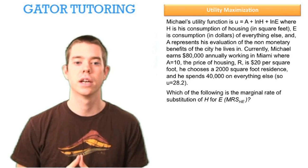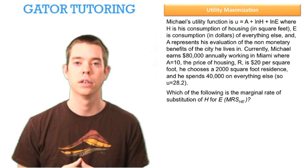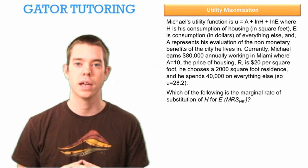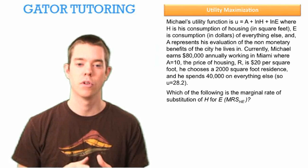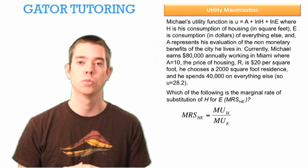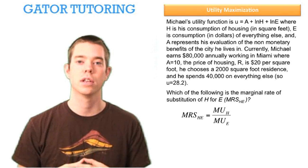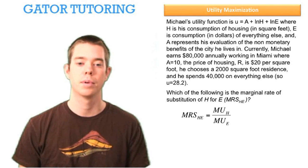The first question says, which of the following is the marginal rate of substitution of H for E? So what is the MRS subscript HE? Well, the order of those variables matters. H comes first, E comes second. So in that case, the marginal utility of housing will be in the numerator, and the marginal utility of everything else will be in the denominator.